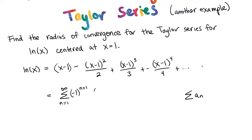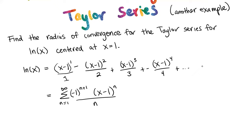Next, we see that we have (x minus 1) to the nth power, because our first term has (x minus 1) to the 1, our second term has (x minus 1) squared, our third term has (x minus 1) cubed, and so on. And then we have our denominator — we can write this divided by 1 if it helps. The denominator is n, because the denominator for the first term is 1, for the second term is 2, for the third term is 3, and so on. So this is our Taylor series for the natural log of x, and it is good for x values near 1. In the rest of this problem, we'll figure out exactly how close to 1.